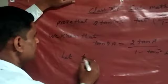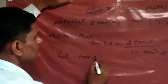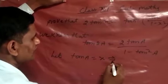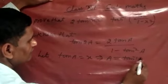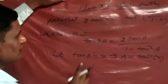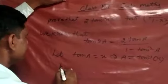Let tan a equal x. This implies that a equals tan inverse x. Put the value of tan a, we get: